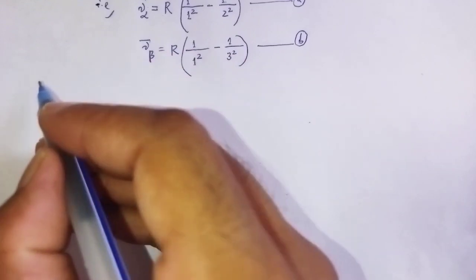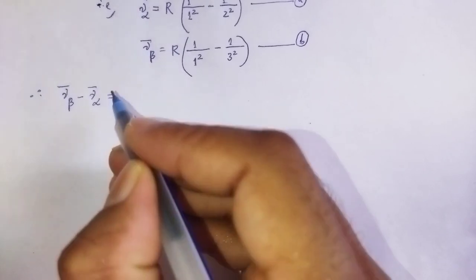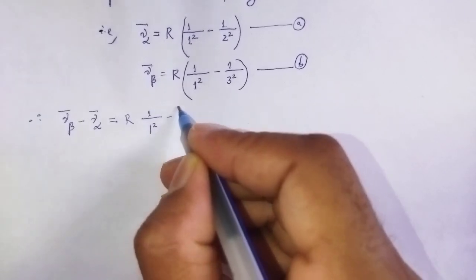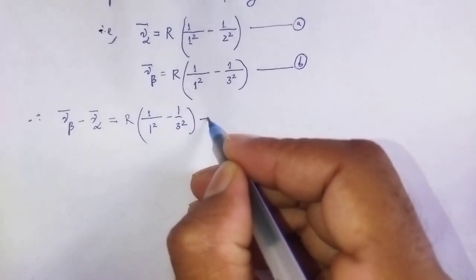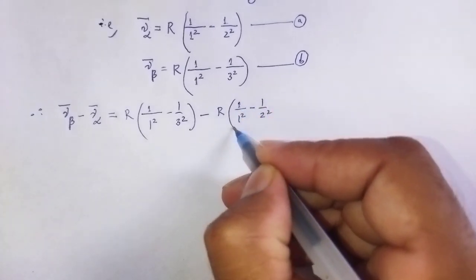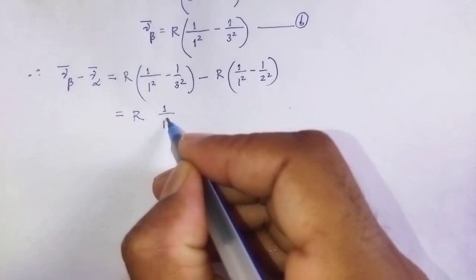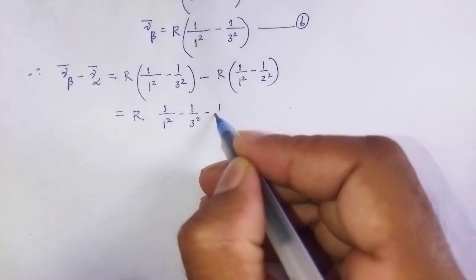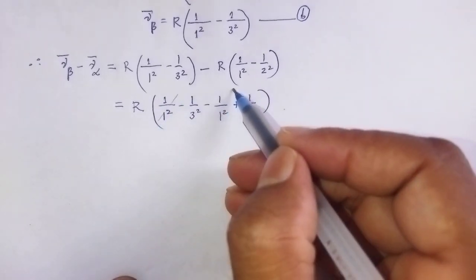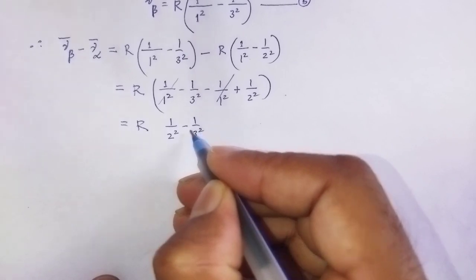Therefore, combining these two expressions, we compute nu-bar-beta minus nu-bar-alpha. Substituting: R times (1/1² − 1/3²) minus R times (1/1² − 1/2²). Taking R as common and simplifying, the 1/1² terms cancel out, giving R times (1 over 2 squared minus 1 over 3 squared).